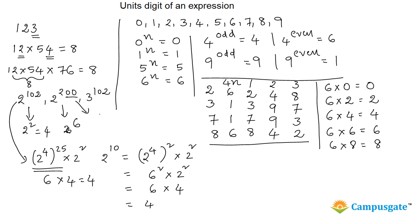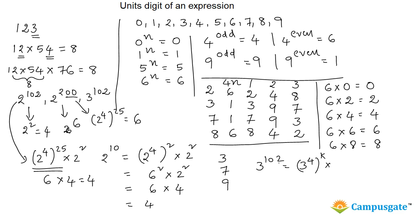For 2 power 200, written as 2 power 4 whole to the power 25: since 2 power 4 is 16 (unit digit 6), and 6 raised to any power again gives 6, that is why we get 6. Similarly for odd numbers — 3, 7, and 9 — when raised to a certain power, they result in 1. And 1 multiplied by any number always results in 1, that is the basic logic. For example, 3 power 102: we write this as 3 power 4 whole to some power k, and the remainder part is 3 squared. Since 3 power 4 is 81, 1 power k is just 1. Then 3 squared equals 9, so the unit's digit of 3 power 102 is 9. This is the logic behind why this shortcut actually works.